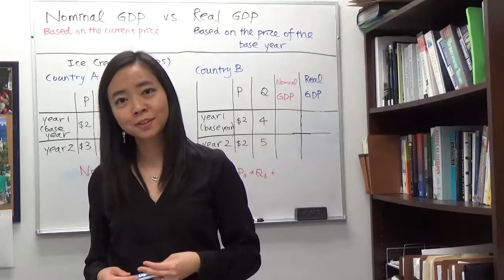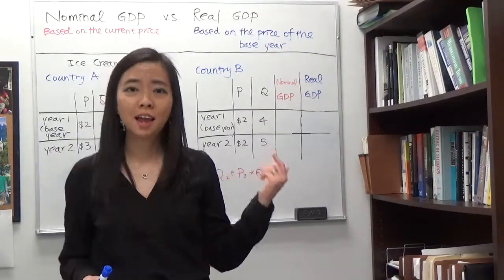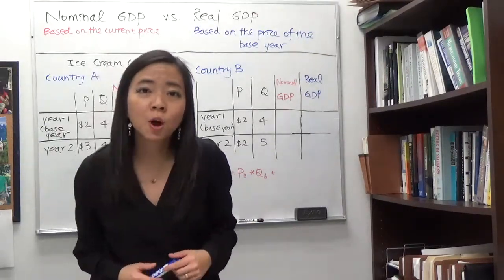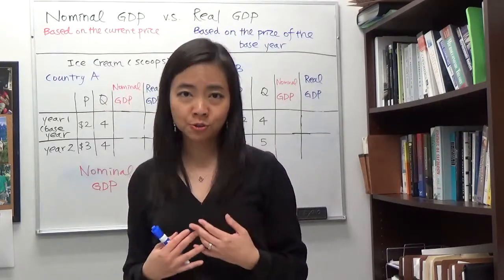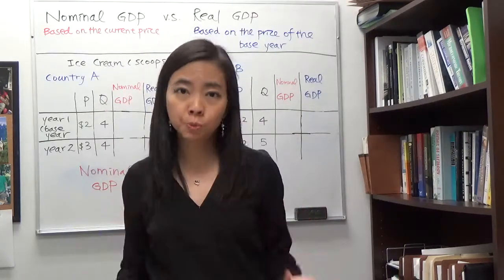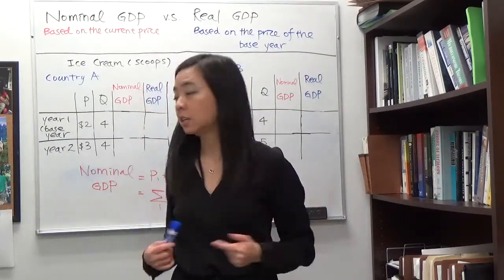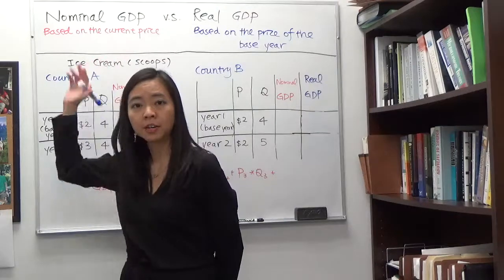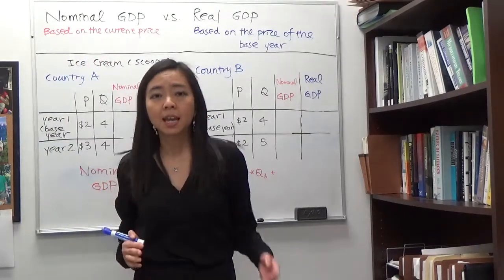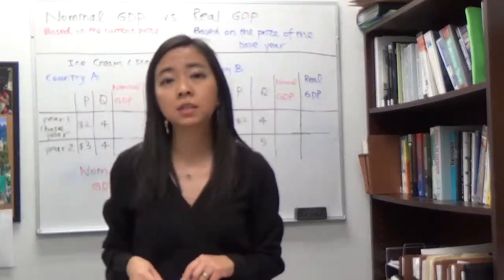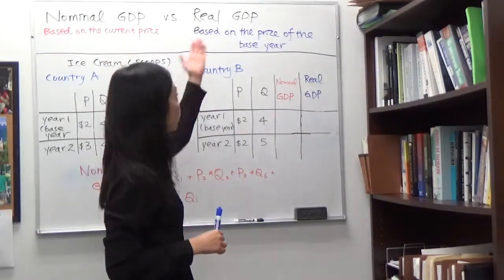Hello everyone, my name is Iris Franz and today we're going to talk about nominal GDP and real GDP. We know that GDP is the dollar value of all final goods and services produced within a country's border, typically within a year. If you calculate GDP using the price of the current year, that would be the nominal GDP, and if you calculate GDP using the price of the base year, that will be the real GDP.